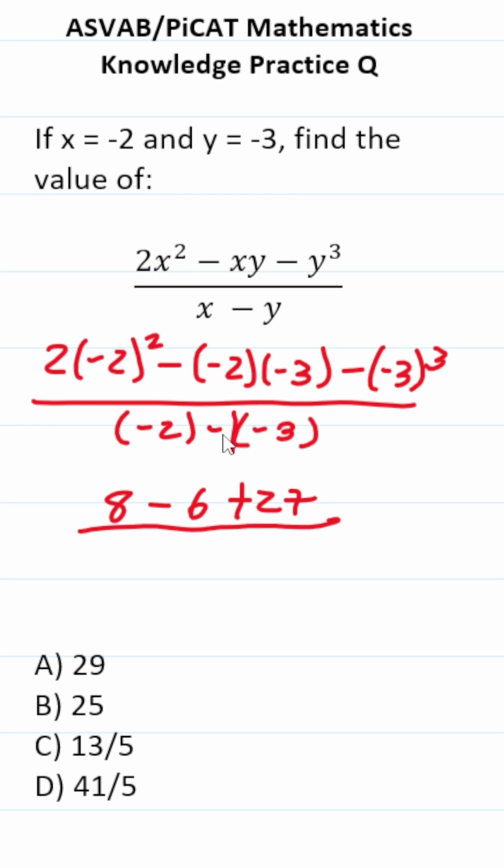Negative 2 minus negative 3 is the same thing as negative 2 plus 3, which is simply positive 1. 8 minus 6 is 2. 2 plus 27 is 29. 29 over 1 is just 29. So the answer is A.